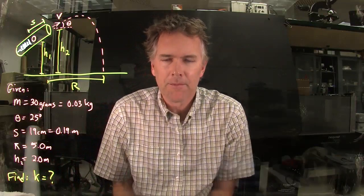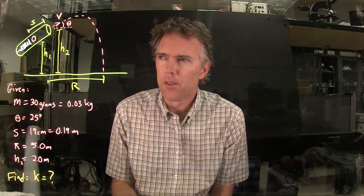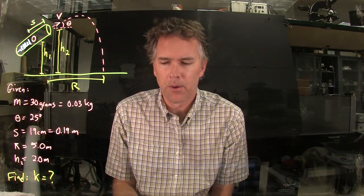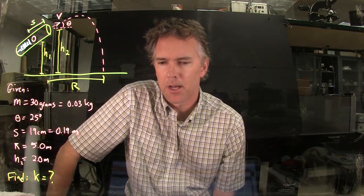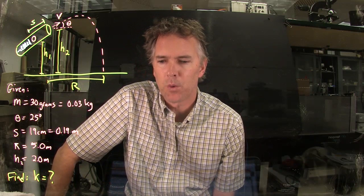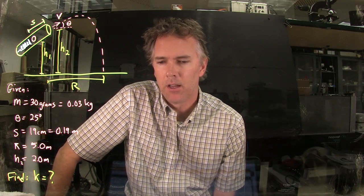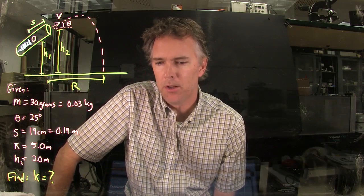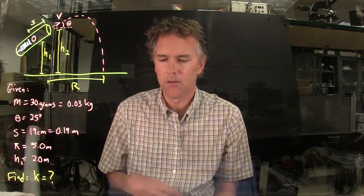Hello class, Professor Anderson here. Let's take a look at a classic homework problem. This is one that you guys have been struggling with a little bit. In this problem, we have the following. In a physics lab experiment, a compressed spring launches a 30-gram metal ball at an angle of 25 degrees. Compressing the spring 19 centimeters causes the ball to hit the floor 2 meters below the point at which it leaves the spring after traveling 5 meters horizontally.